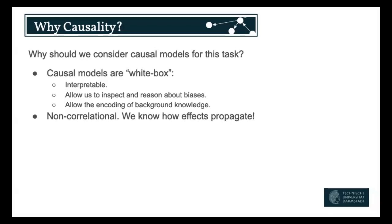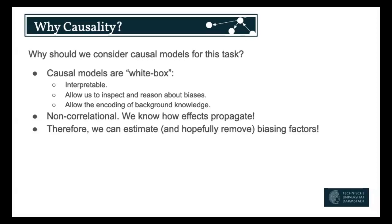One of the benefits of causality is that we have a notion of how effects propagate. So if some attributes are correlated, like we saw in previous lectures, we can figure out in which direction the effects travel and how we can adjust for them.